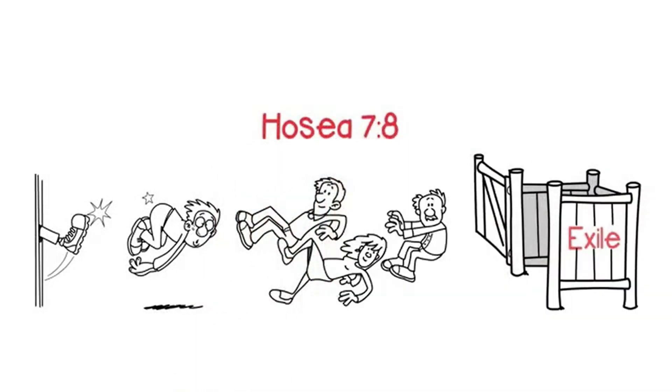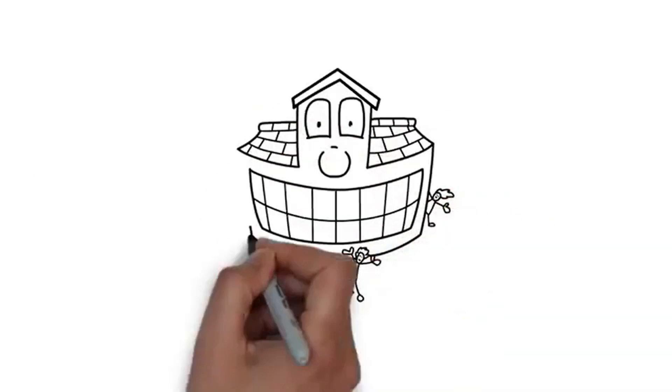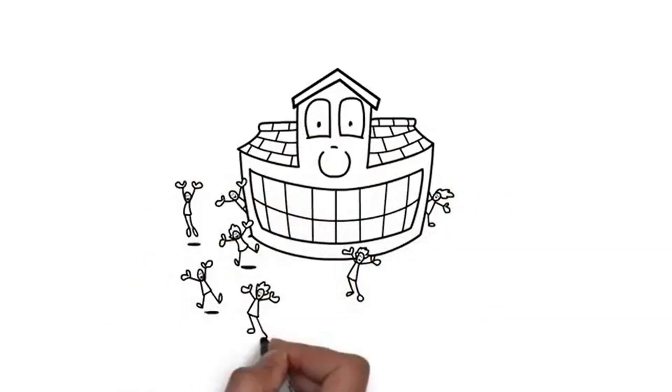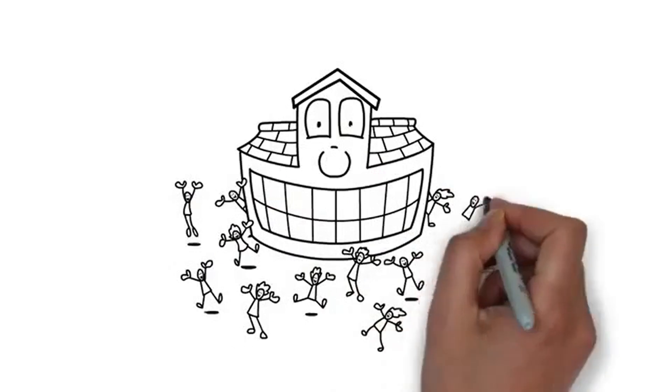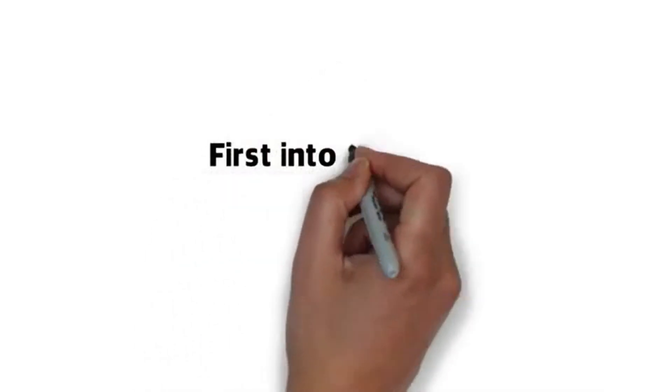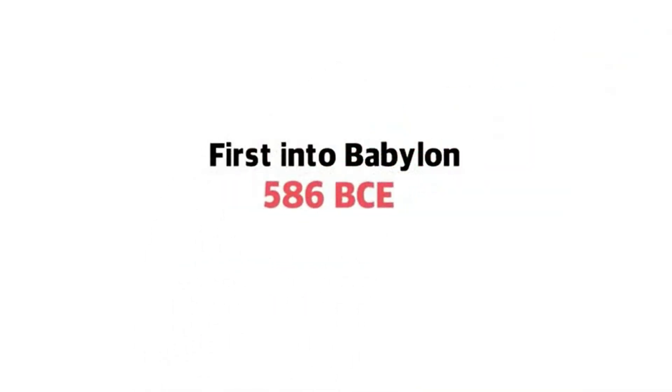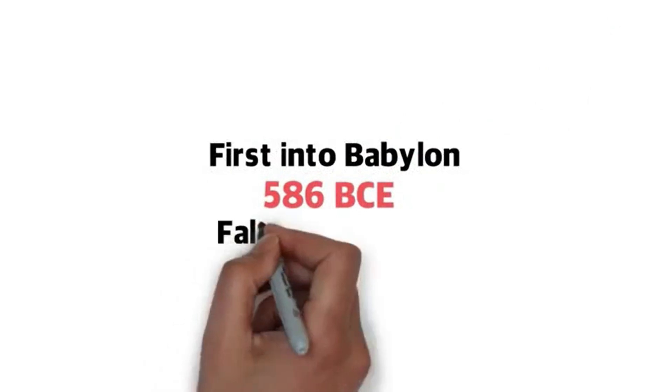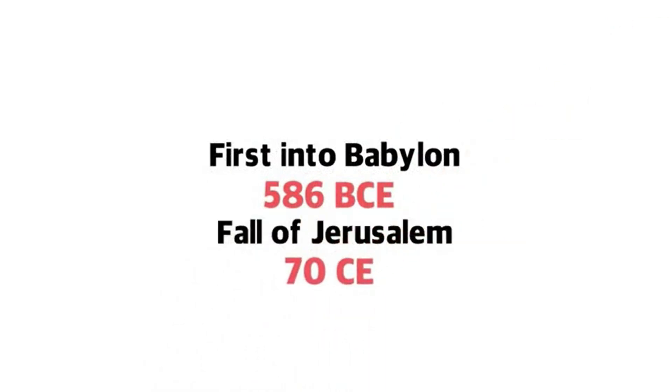The house of Judah was never divorced by God, but they also went into exile for Torah disobedience. First into Babylon in 586 BCE, and after the fall of Jerusalem in 70 CE, again exiled into all the world.